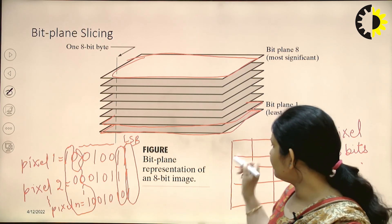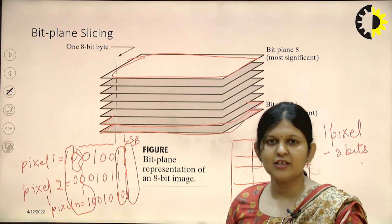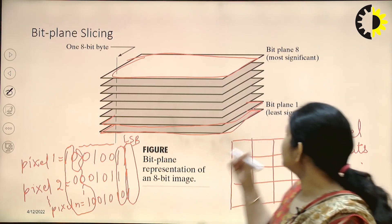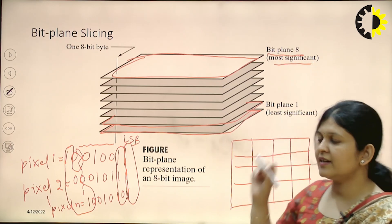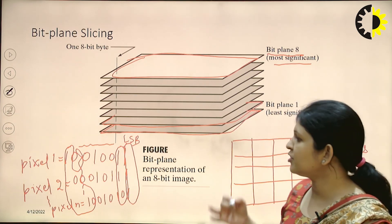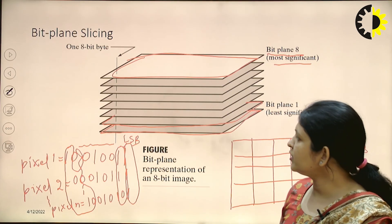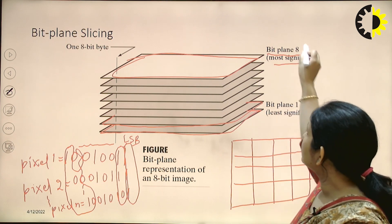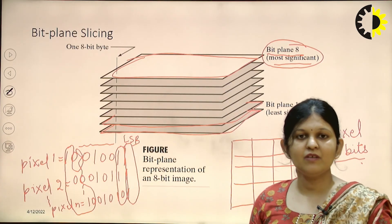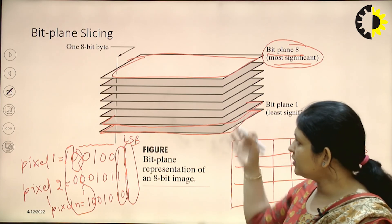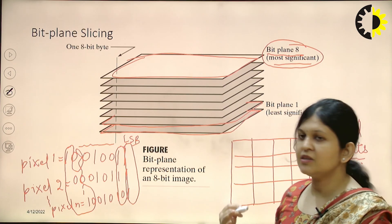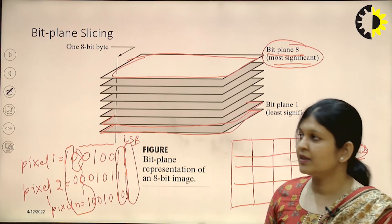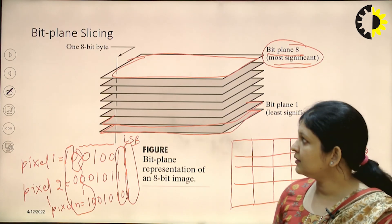The MSB plane, which is bit plane 8, stores the highest information regarding the original image. So instead of storing the original image at 8 bits per pixel, if we just want to convey the key information we can store only the MSB plane, reducing to 1 bit per pixel. If we merge all the planes we get back the original image. This is how bit plane slicing can be used to reduce the size of the image. Thank you so much.